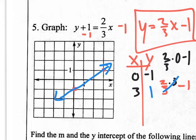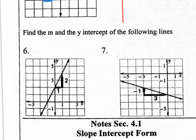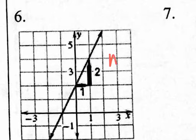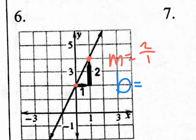We're moving on to finding the slope and y-intercept of lines. The slope is simply rise over run. So what's the slope here? The rise goes up 2 and the run is 1. It also asks for the y-intercept. Just as m refers to slope, there's another variable B that refers to the y-intercept. The y-intercept is the location where your line crosses the y-axis. It crosses right there at a value of 2.